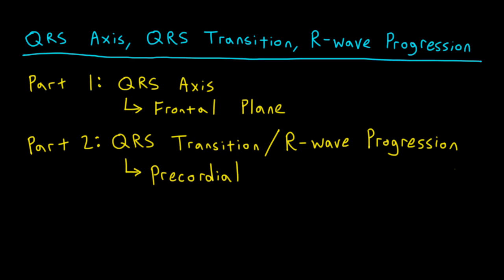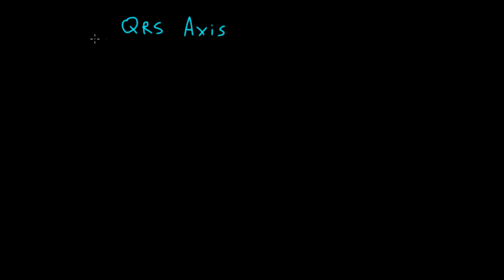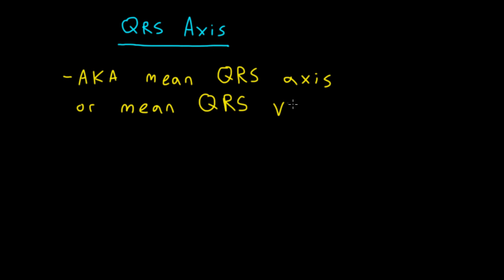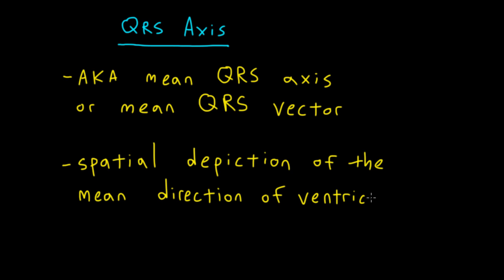I'll help you understand how we can use the transition in conjunction with the axis to get the best idea of what's going on with your patient's heart. Let's start with axis. The QRS axis, also known as the mean QRS axis or mean QRS vector, is a depiction of the spatial direction of ventricular activation in the frontal plane.